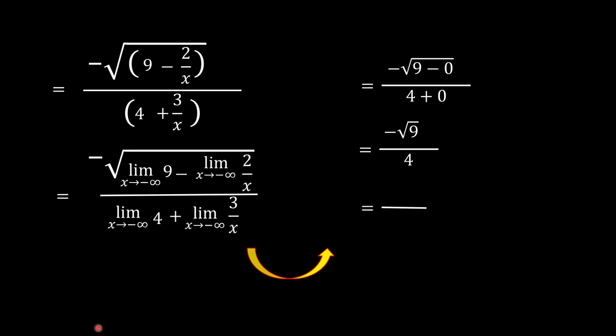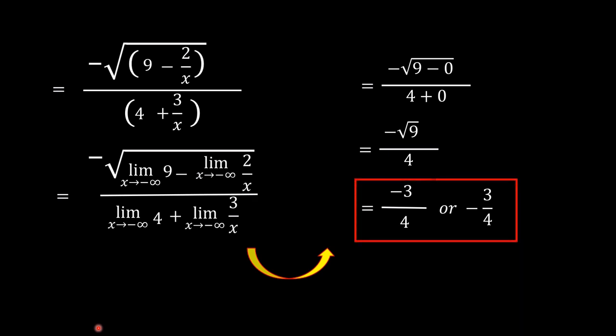This is now equal to negative square root of 9, divided by 4, which equals negative 3 over 4. So the answer is negative 3 over 4.